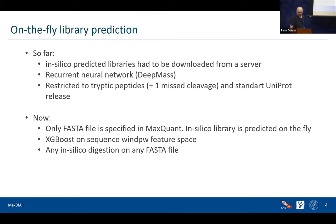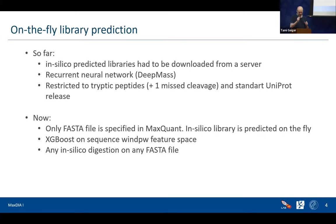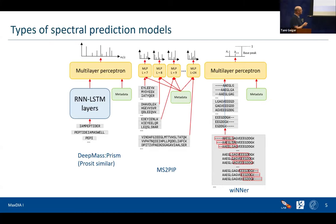This is not done with recurrent neural networks anymore. We use XGBoost as the core machine learning technology, working on window features centered around the bonds where you want to predict breakability. This is completely flexible — it could also be non-tryptic, non-protease-digested peptides, whatever you want basically.